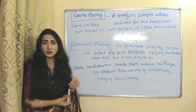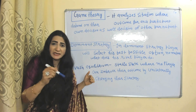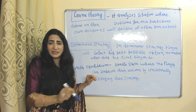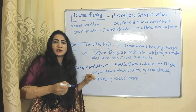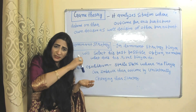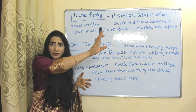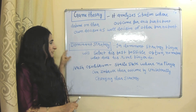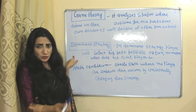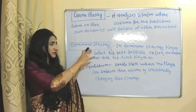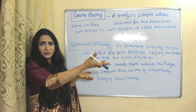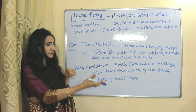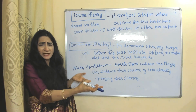Game theory is a situation where the outcome for participants depends on their own decisions as well as the decisions of other participants. We study dominant strategy and Nash equilibrium. A dominant strategy is a situation where a player selects the best possible option no matter what their rival player does. Nash equilibrium is a stable state where no player can improve their outcome by unilaterally changing their strategy.